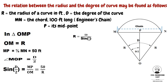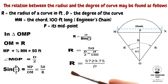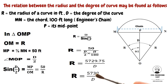When D is small, sine of D/2 may be taken approximately equal to D/2 in radians. So R equals 50 divided by D/2, where D is in radians. Multiplying with the relation π/180 to convert to degrees, by simplification R equals 5729.75 divided by D. Rounding off, the approximate relation is R equals 5730 divided by D.